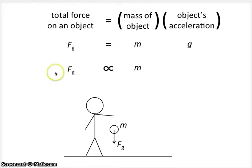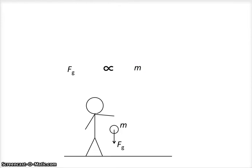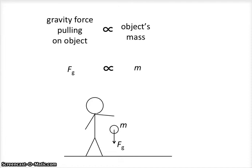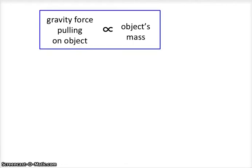So what we do is we write a proportionality like this, which takes away anything that's constant. And it shows only the things that can change to impact the value of Fg. This is a really important proportionality. It says that the gravity force pulling on an object is proportional to the object's mass. The gravity force here, pulling on the apple, is proportional to the apple's mass. And if this were a watermelon, the gravity force pulling on the watermelon would be proportional to the watermelon's mass. We're going to use this later, so we're going to put a blue box around it.